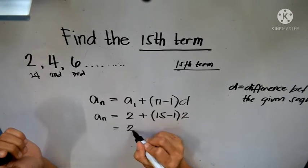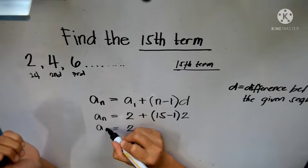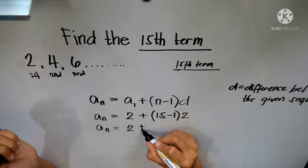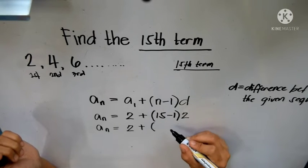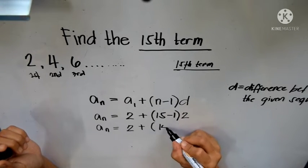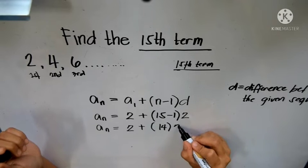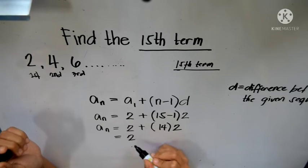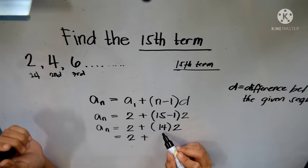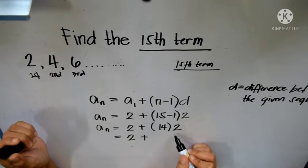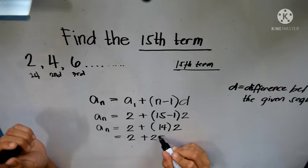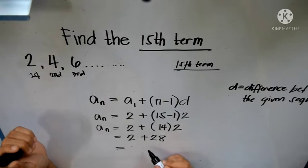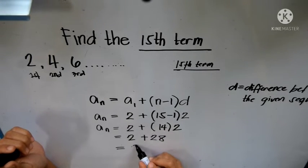So we have our a sub n equals 2 plus 15 minus 1 is 14, and our d is 2. So we have 2 plus we multiply first 14 times 2 that is 28, and then 2 plus 28 is 30.